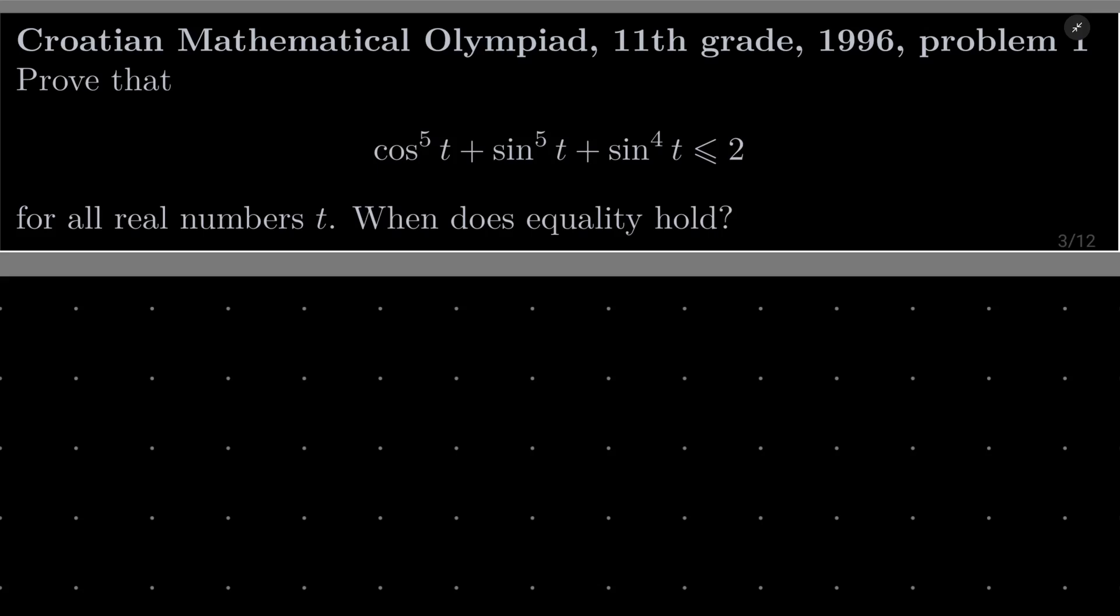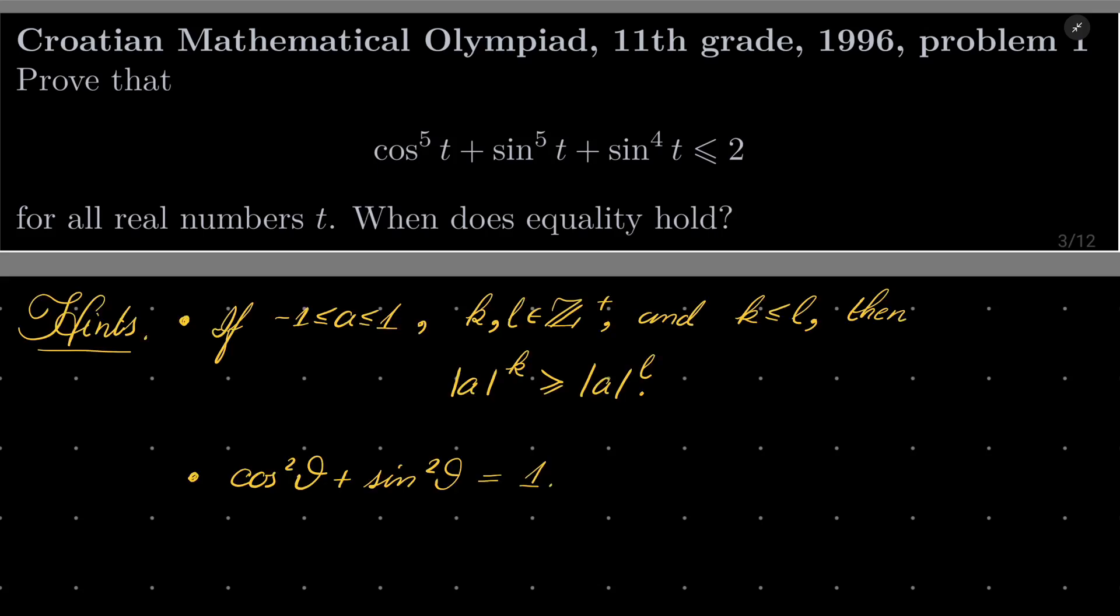It's a nice problem, here are my hints, it's not terribly difficult. First, notice the following fact that if a is a number between minus 1 and 1 and k and l are positive integers, k is less than or equal l, then the absolute value of a to the power of k is greater than or equal the absolute value of a to the power of l. And also, this immortal identity, cosine squared plus sine squared is always 1. It will also be useful.